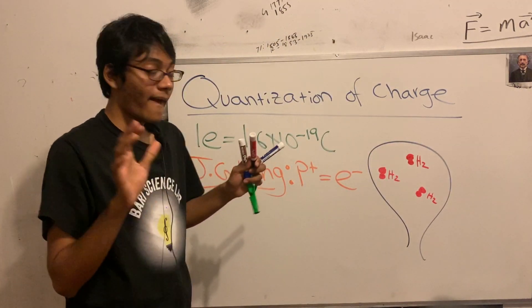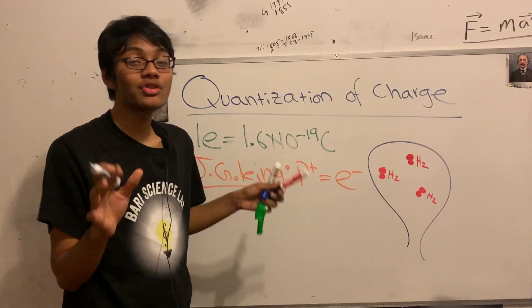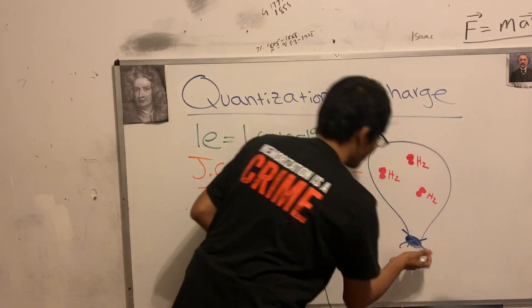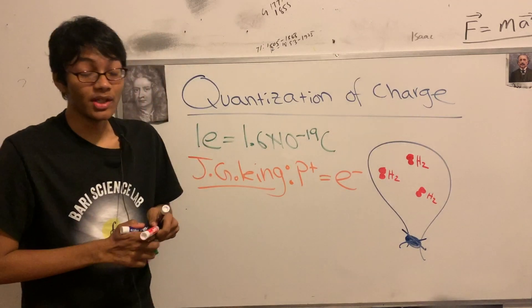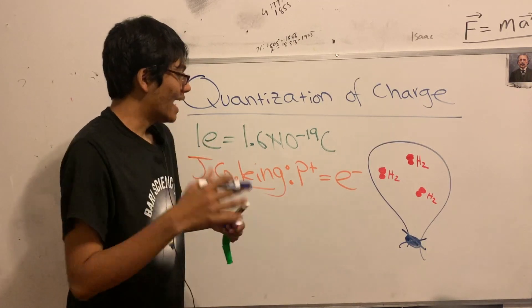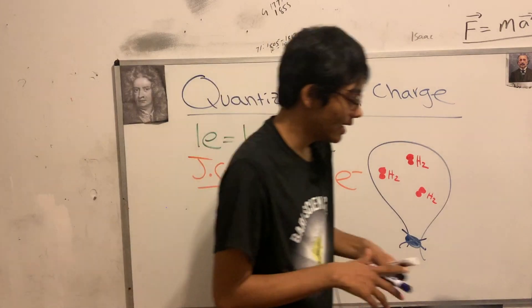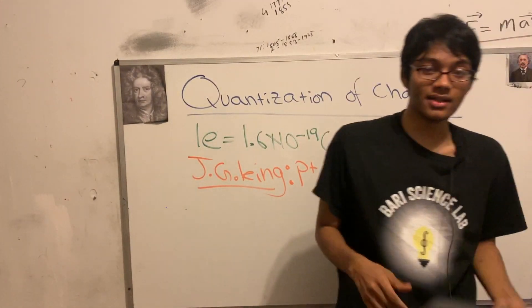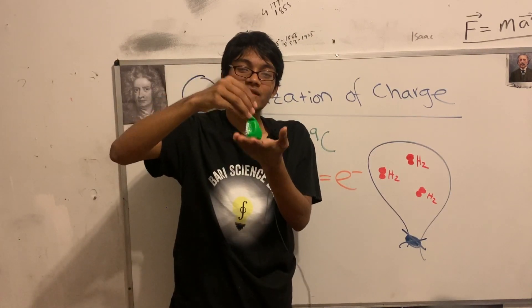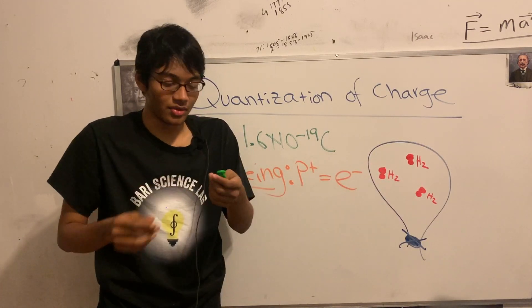We designed the experiment so that no hydrogen ions are allowed to leave the balloon. Imagine a cap or seal here. No hydrogen ions are allowed to leave the balloon. Just like J.J. King did, I'm going to pump up my balloon.